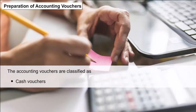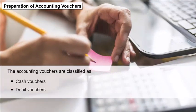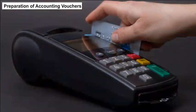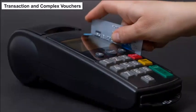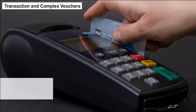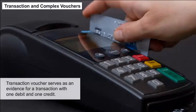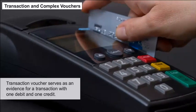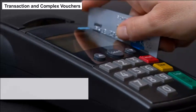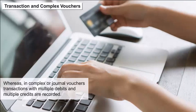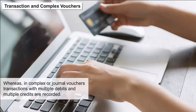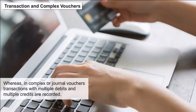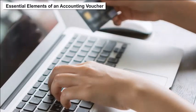The accounting vouchers are classified as cash vouchers, debit vouchers, credit vouchers, journal vouchers, etc. A transaction voucher serves as evidence for a transaction with one debit and one credit, whereas in complex or journal vouchers, transactions with multiple debits and multiple credits are recorded.